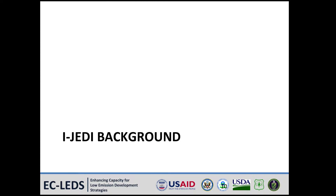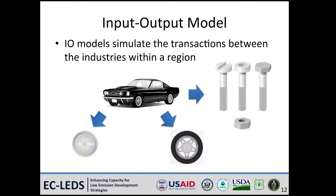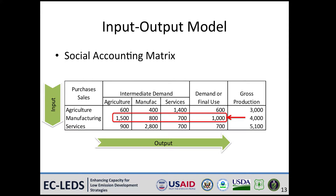iJEDI uses the input-output method to calculate the effects of renewable energy developments in the economy of a region as a whole. Most economic activities have effects on other industries or sectors. Take the example of a carmaker: a manufacturer needs to buy parts from different suppliers. A carmaker would buy headlights, tires, and screws from other suppliers, and these purchases have an economic effect on those suppliers. The input-output model calculates the effects that an economic activity may have on the rest of a regional economy as a whole.